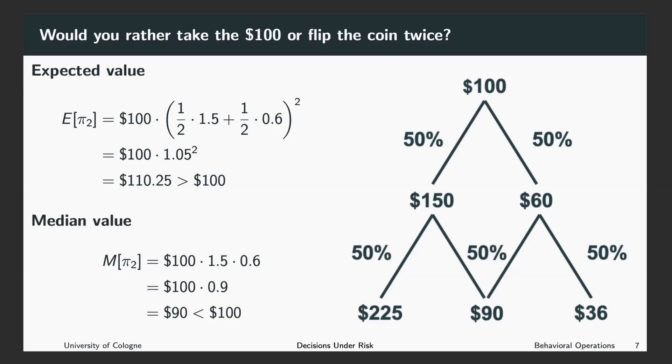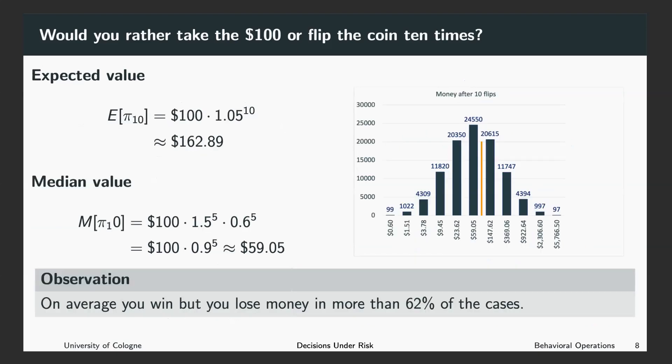Let's proceed to the third question. Would you rather take the $100 or flip the coin 10 times? We can do the same calculation as before, now take into account that we do not only toss the coin twice but 10 times. And each time we toss the coin, the expected value grows by 5%. This implies that the expected value of the investment is $162.89. But again, we can look at the median value.